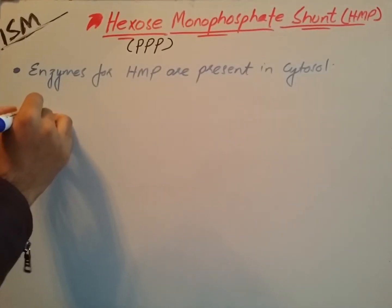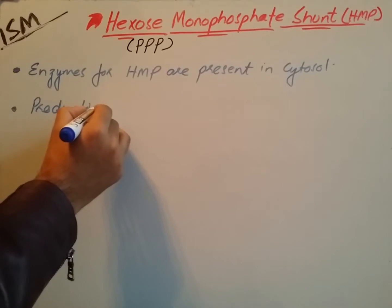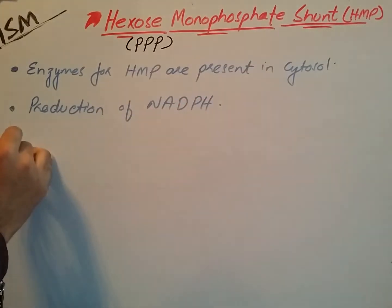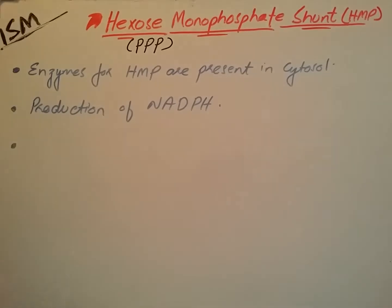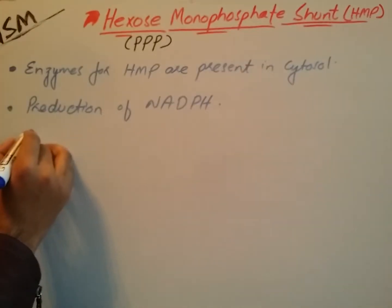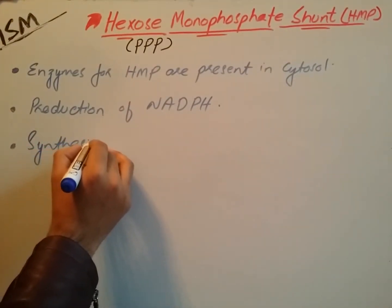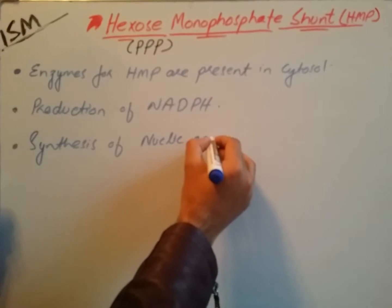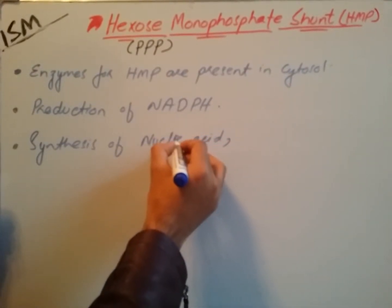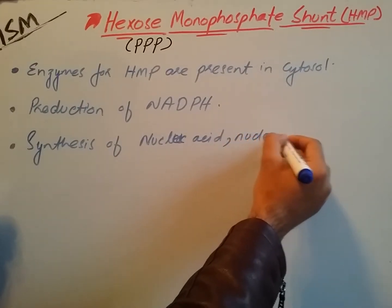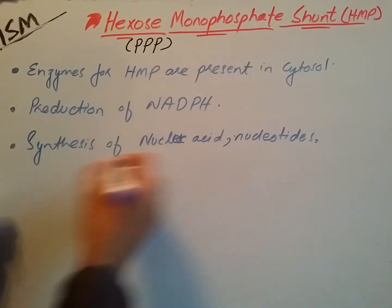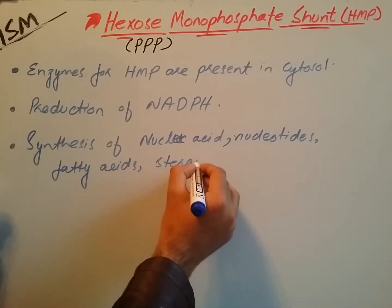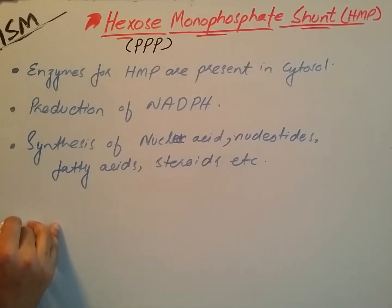This pathway is responsible for the production of NADPH, which is utilized by the cell for the synthesis of nucleic acids, nucleotides, fatty acids, and steroids. This pathway mainly occurs in the liver.